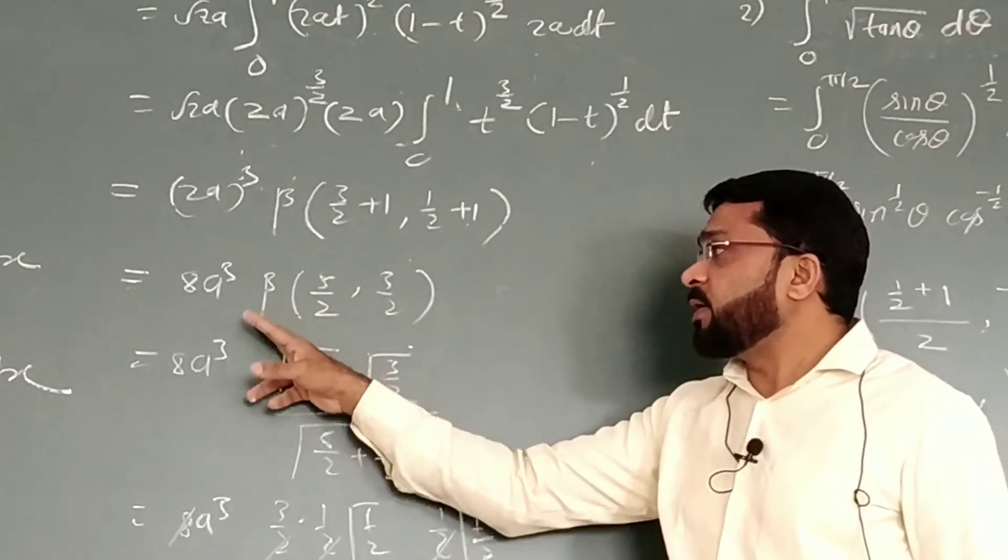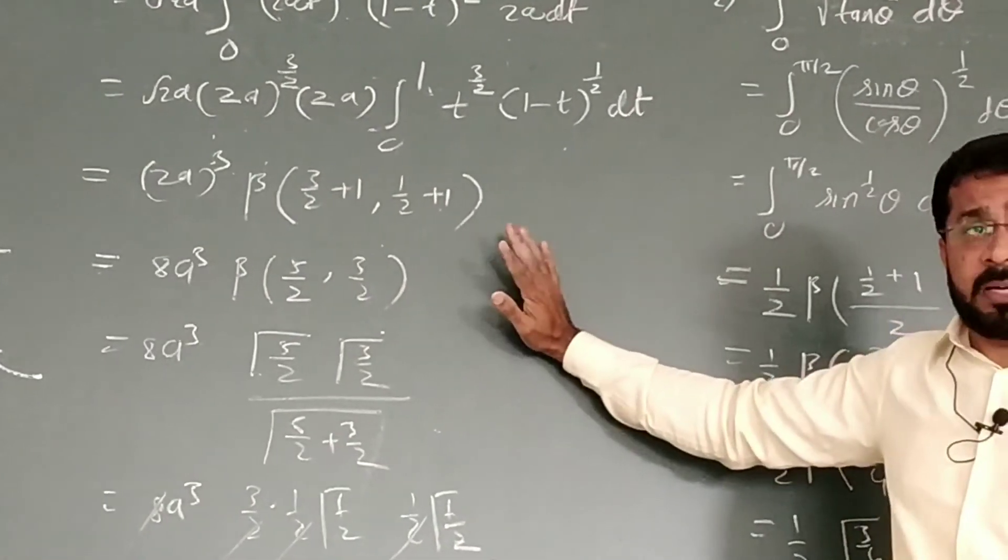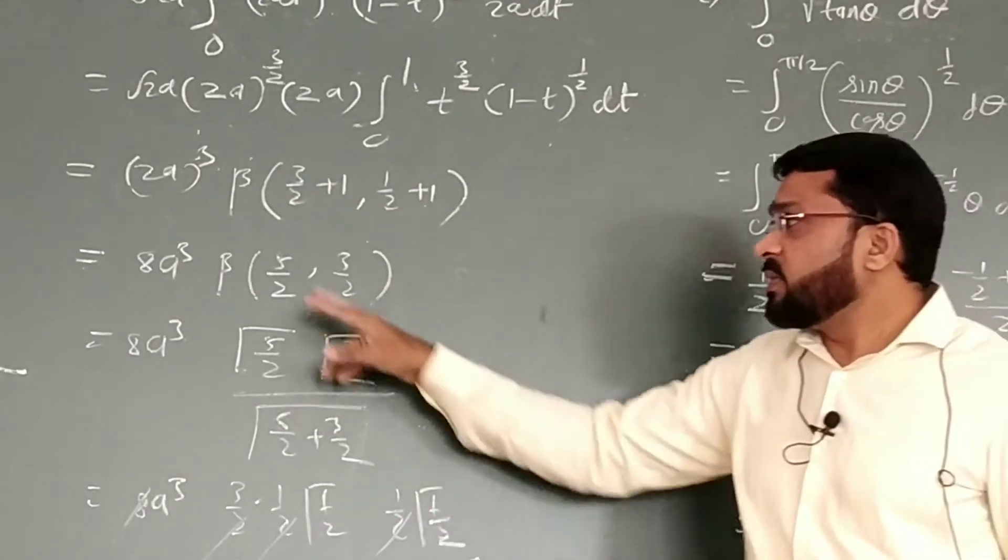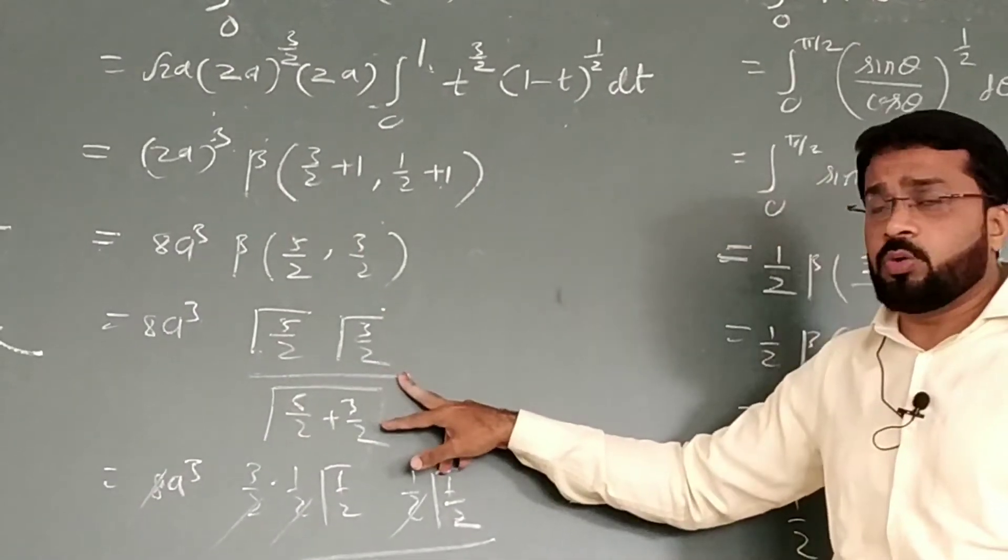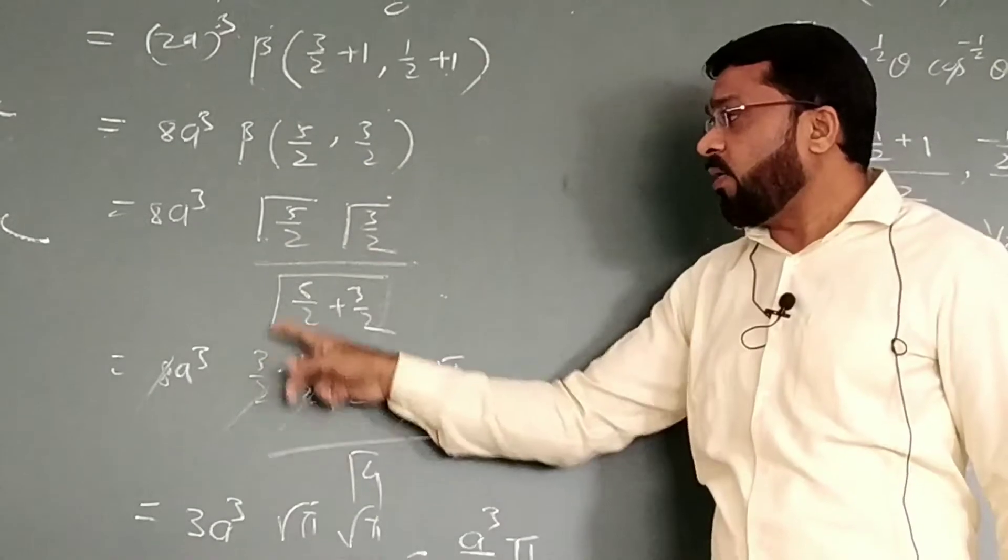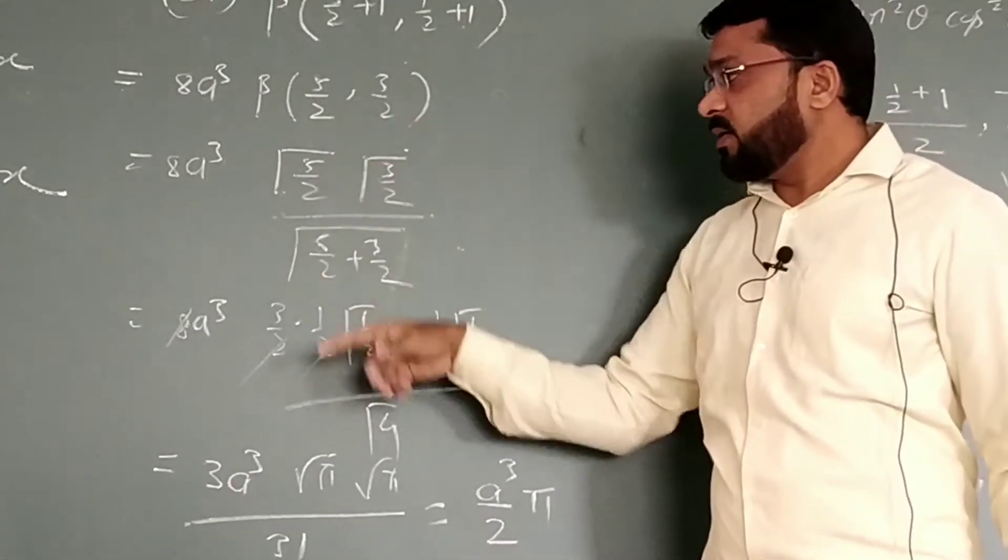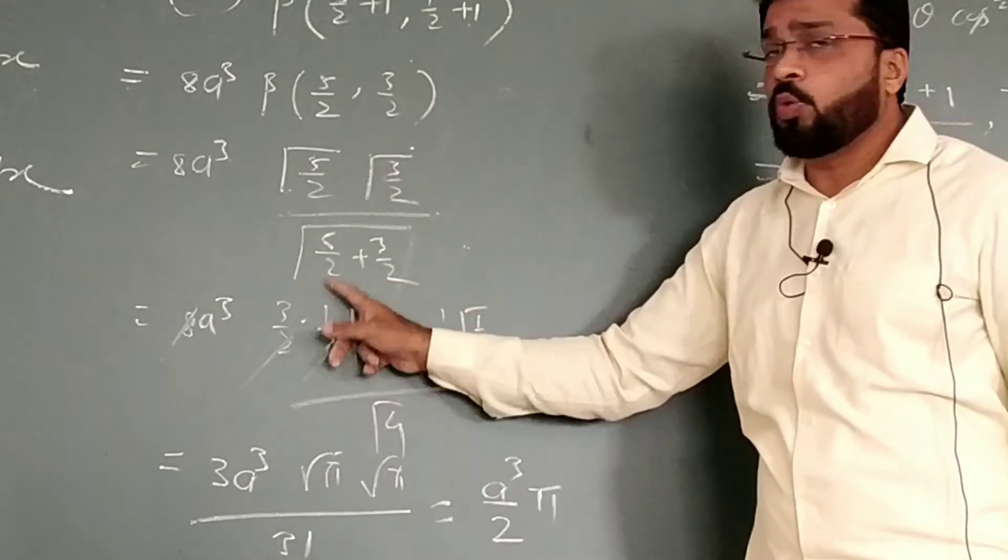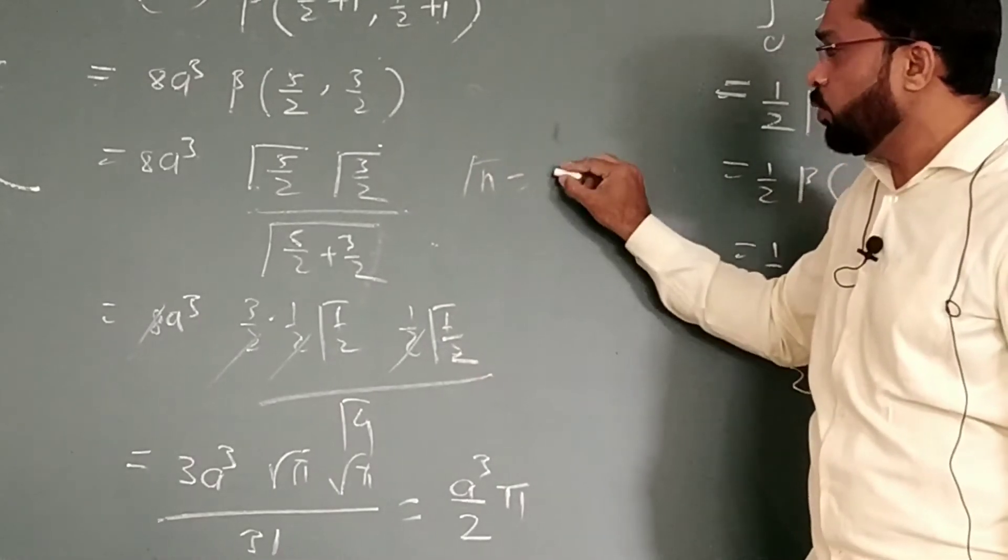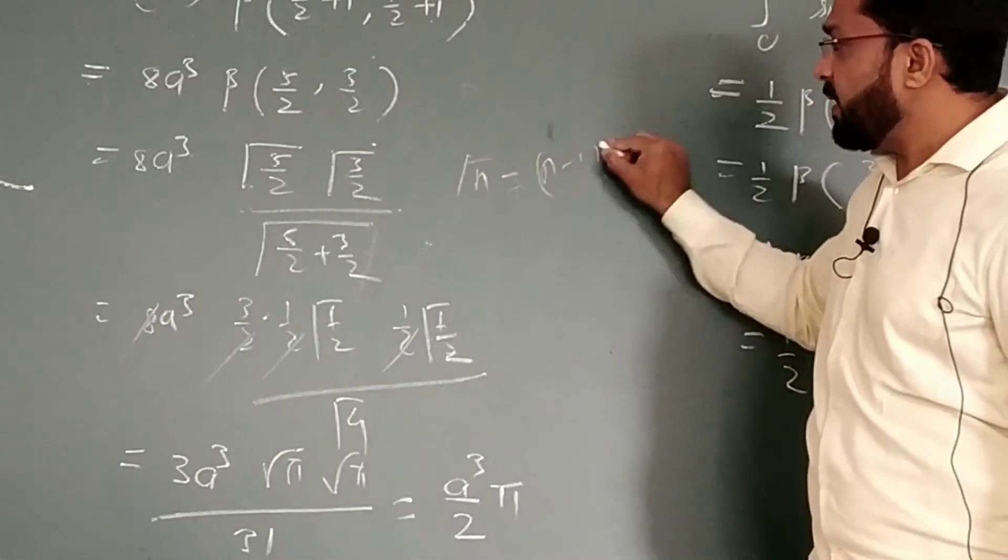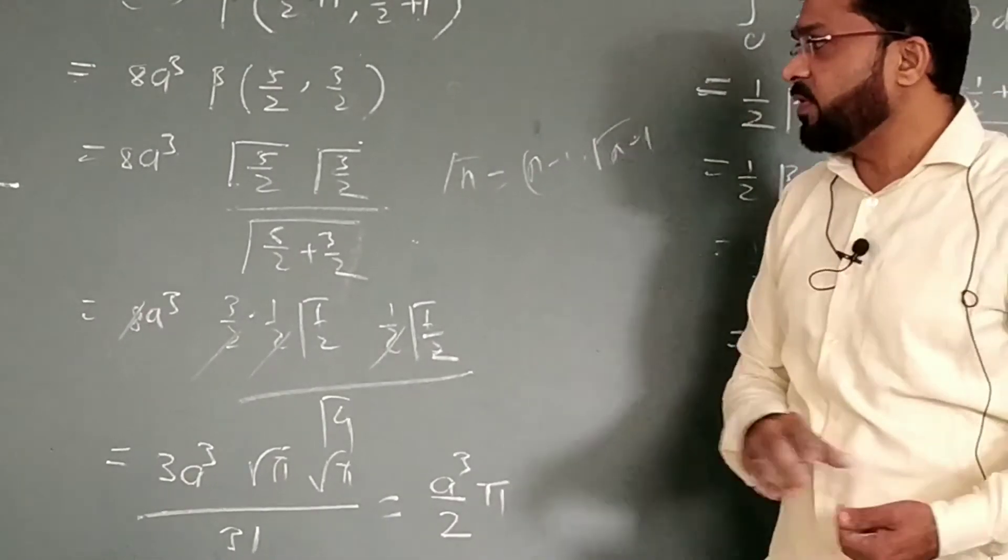Now, beta of 5/2 and 3/2. To evaluate this one, I will use the relation between the beta and gamma function. Apply that, it will be gamma of 5/2, gamma of 3/2, then addition of this 2, that is gamma of 5/2 plus 3/2. Now, gamma of 5/2, that we know by the result, can be written as 3/2 times 1/2, gamma of 1/2. This result we use, that is gamma of n equals to n minus 1, gamma of n minus 1.